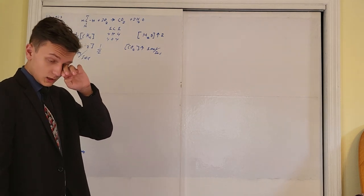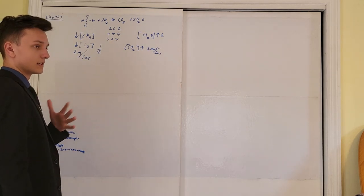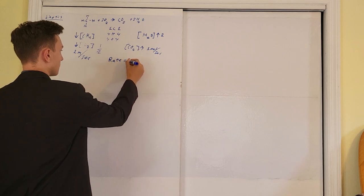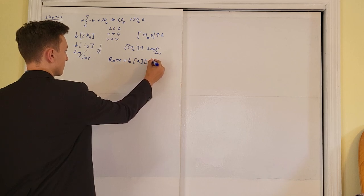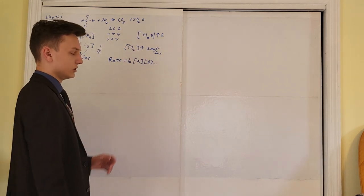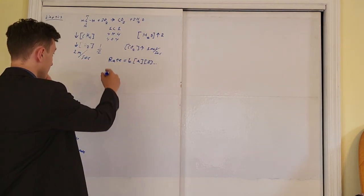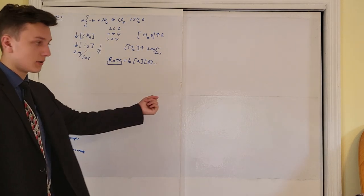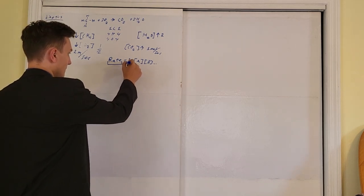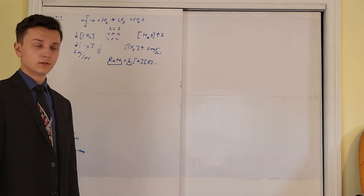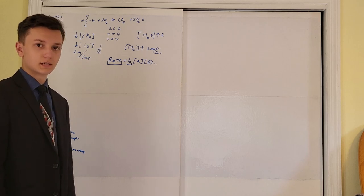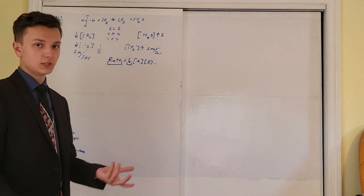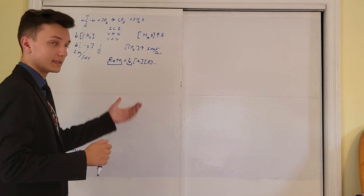In reaction rates, we have something called the rate law. The rate law is an equation you'll be asked to derive. Its general form is: rate equals K times the concentration of A times the concentration of B, and so on depending on how many species are present. Rate refers to the total rate of the whole reaction — how fast reactants are being turned into products. K is a constant that differs for every reaction but remains constant throughout. The concentration of A and B are the concentrations of the reactant species.